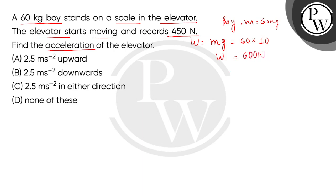Now we can see here that the 600 Newton is more than 450 Newton, which the elevator records here. What does this mean? The motion of the elevator will be in the downward direction, because then the boy's apparent weight feels less.